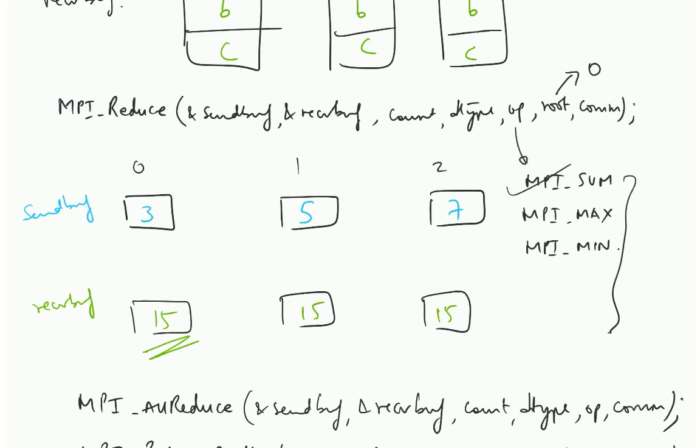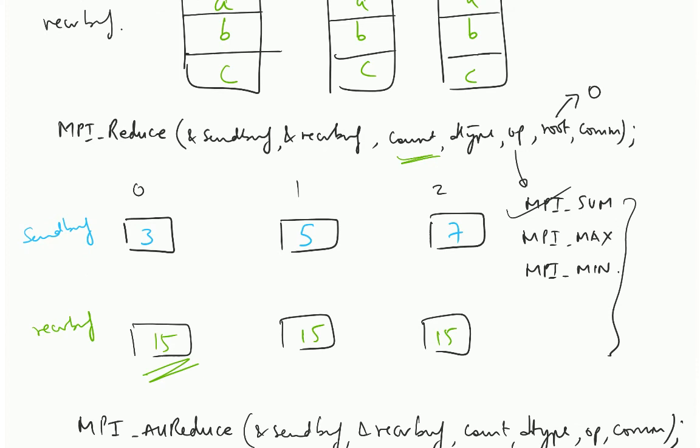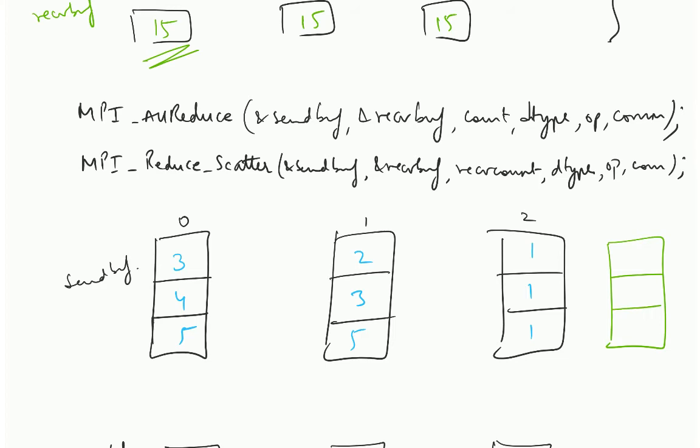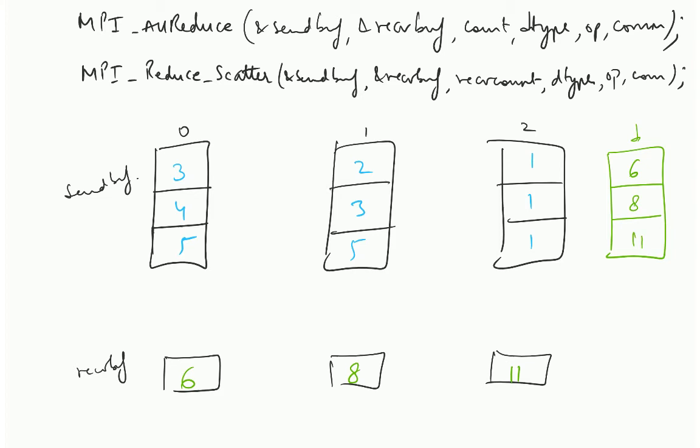So it is basically nothing but you do a reduce. By the way, we spoke about reduce. So reduce there is a count. When you do a reduce, it need not be of a single element. It can be an entire array. It is going to do element wise operation on that. Element wise summation or element wise min, max and so on. What I am showing here is the element wise addition. So this is nothing but a reduce. You reduce this into a single array. This is nothing but the reduce and this is nothing but the scatter. This array is being scattered. So reduce scatter is nothing but the combination of reduce and scatter.